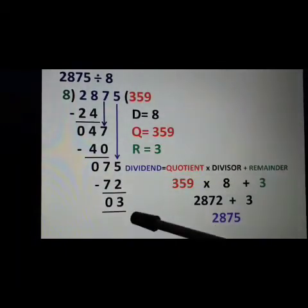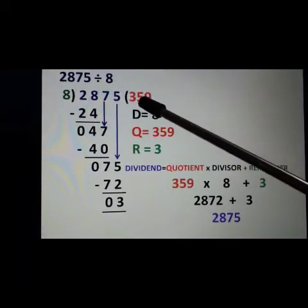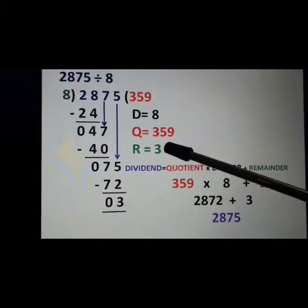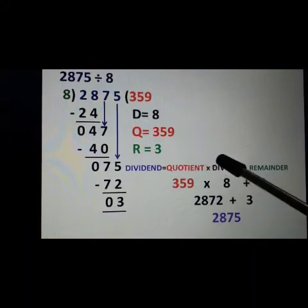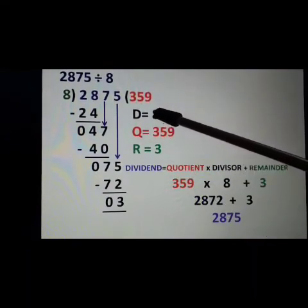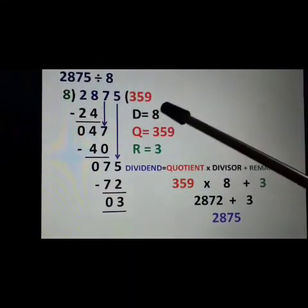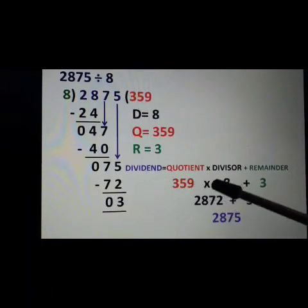Next is verify and check the answer. If we want to check that our answer is correct or not, we use this formula: Dividend is equal to quotient into divisor plus remainder. Here 2875 is the dividend, 8 is the divisor, 359 is the quotient, and 3 is the remainder. That means 359 into 8 plus 3.